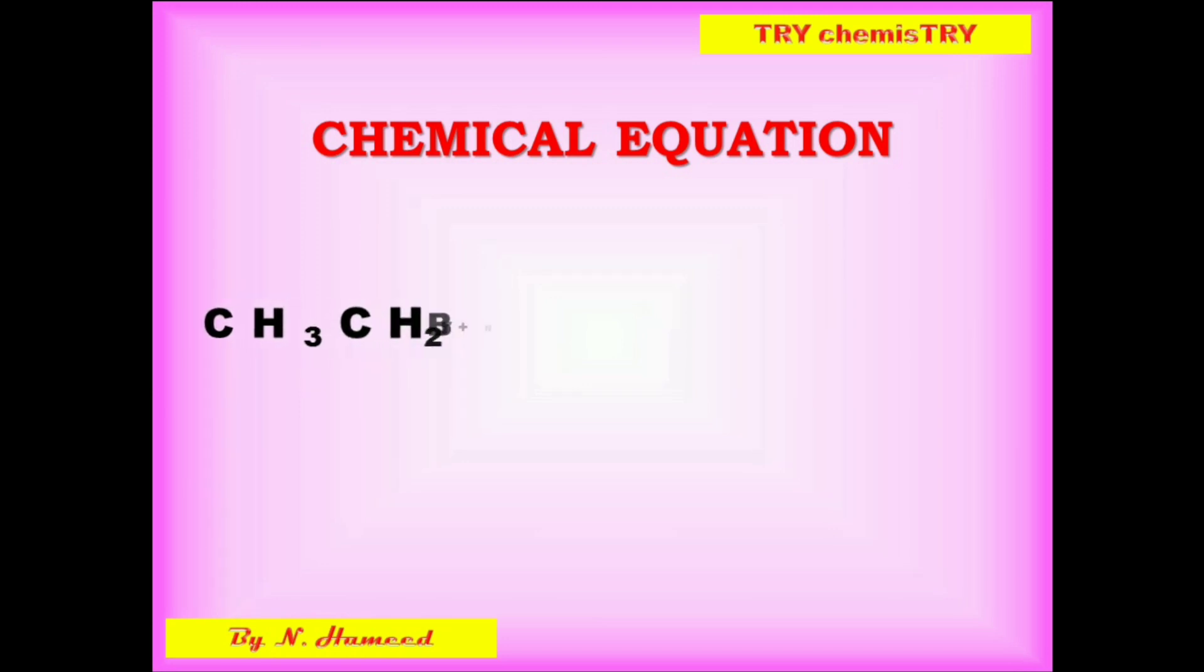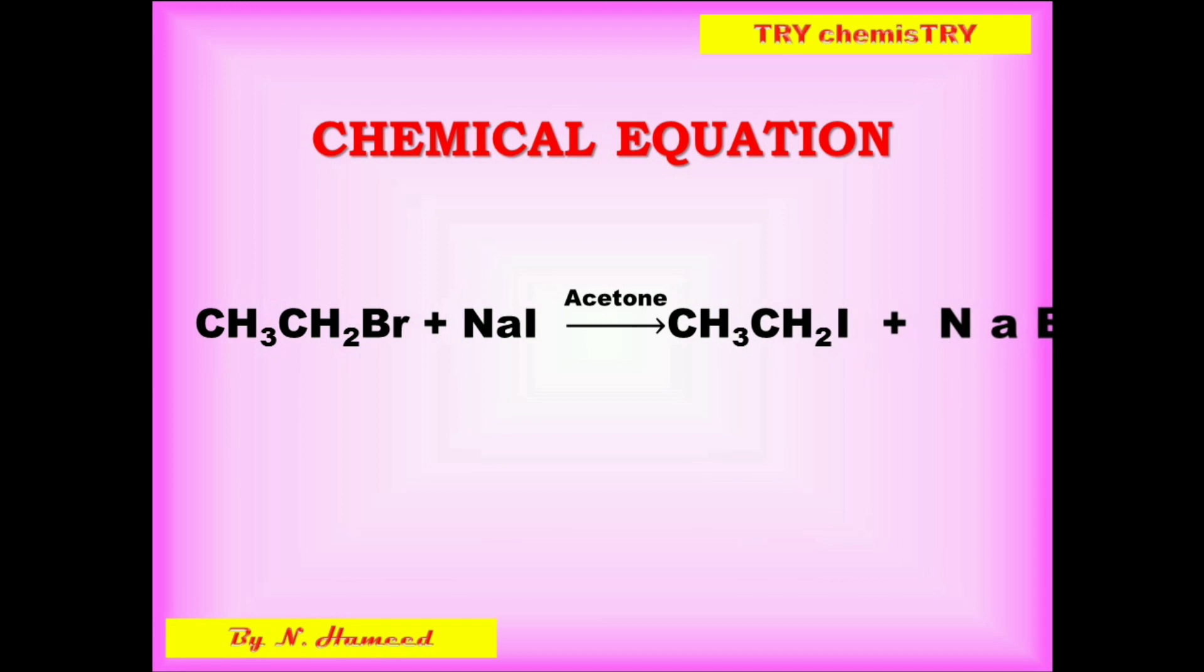Bromo ethane reacts with sodium iodide in the presence of acetone to give iodo ethane and sodium bromide.